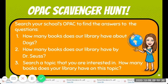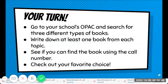Search your school's OPAC to find the answers to these questions: How many books does our library have about dogs? How many books does our library have by Dr. Seuss? Search a topic that you're interested in — how many books does your library have on this topic? In your turn, go to your school's OPAC, search for three different types of books, write down at least one book from each topic, and see if you can find the book using the call number. Check out your favorite choice.